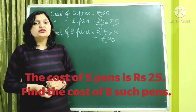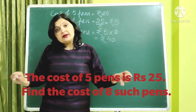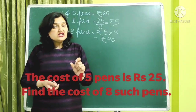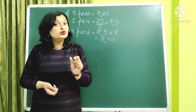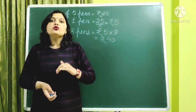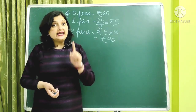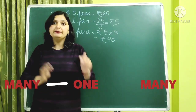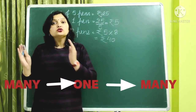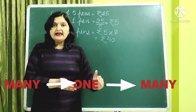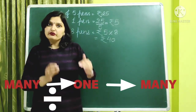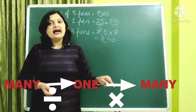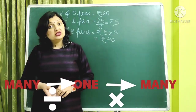Such type of questions are based upon the unitary method. The word 'unitary' contains 'unit' — it means you first need to find about one unit from the given many, and then go from one to many again. So: many to one means you divide, and one to many means you multiply. This method is known as the unitary method.